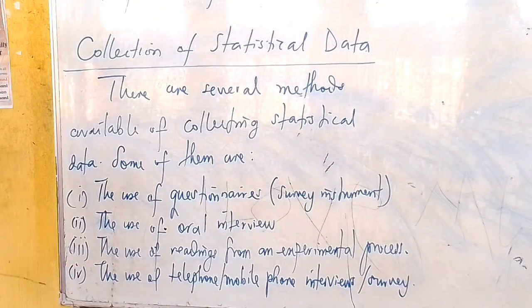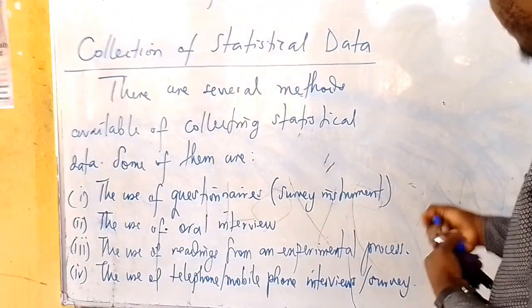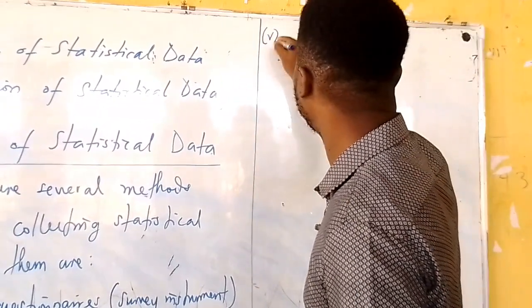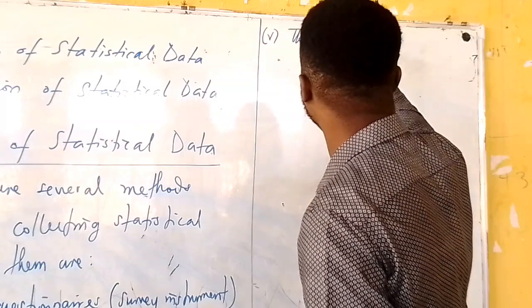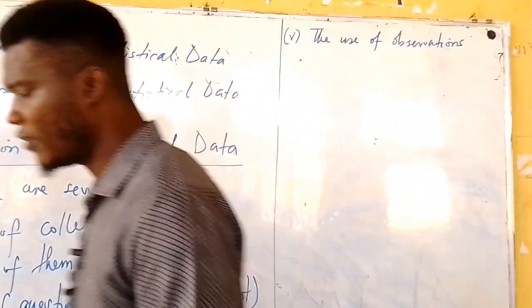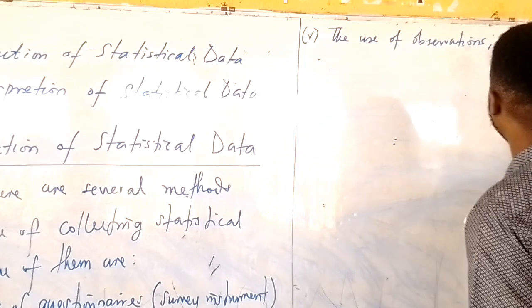I believe you must have come across all of these — you may not have known that what you were doing was one of them. These are different means of obtaining statistical data. A fifth one I would want to add is observation — the use of observation. So these are five methods for collecting data, and there are more.